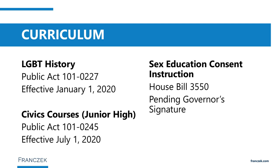Public Act 101-245 is targeted at sixth, seventh, and eighth grade, and requires at least one semester of civics education focused on government institutions, discussion of current and societal issues, service learning, and simulations of the democratic process — aiming to get kids involved early in understanding how government works and how they can participate.